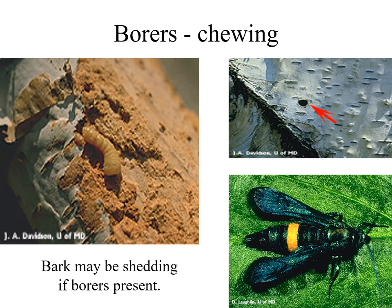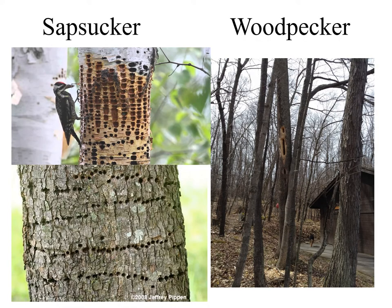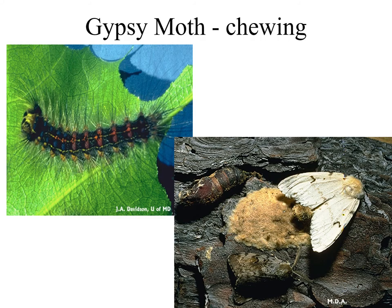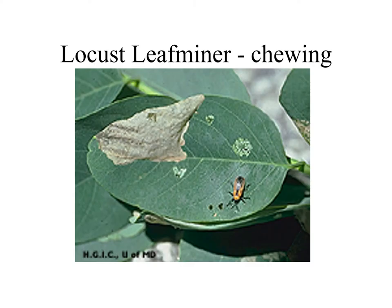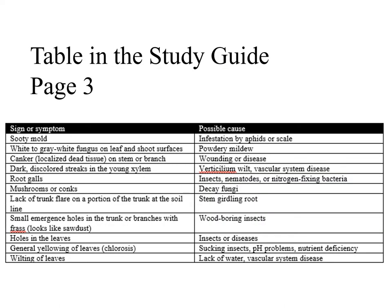Holes in the bark with visible frass may be caused by borers. If the holes are in a uniform horizontal band around the trunk without any frass, these are most likely caused by sap suckers. The large hole in the tree shown in the photograph is caused by a pileated woodpecker. Caterpillars, such as the gypsy moth caterpillar, cause damage to trees with their chewing mouth parts. Leaf miners also cause damage to trees based on chewing mouth parts, such as the locust leaf miner. Let's review some of the signs and symptoms and their possible causes in the table in your study guide on page 3.